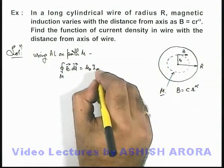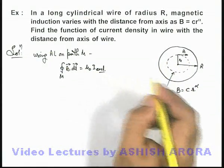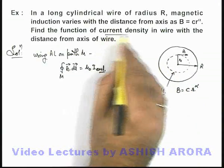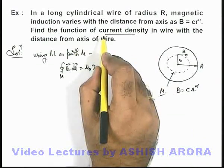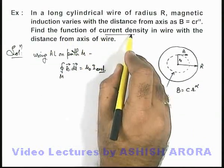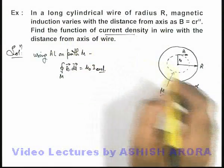This current enclosed can be calculated by using the current density, which actually we are required to find. The question is saying that current density is varying as a function of distance from the axis.